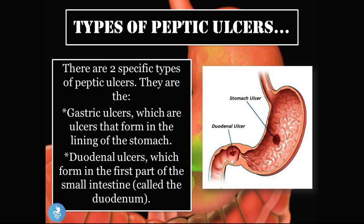So what are the types of peptic ulcers? There are two specific types: gastric ulcers, which form in the lining of the stomach, and duodenal ulcers, which form in the first part of the small intestine, the duodenum.